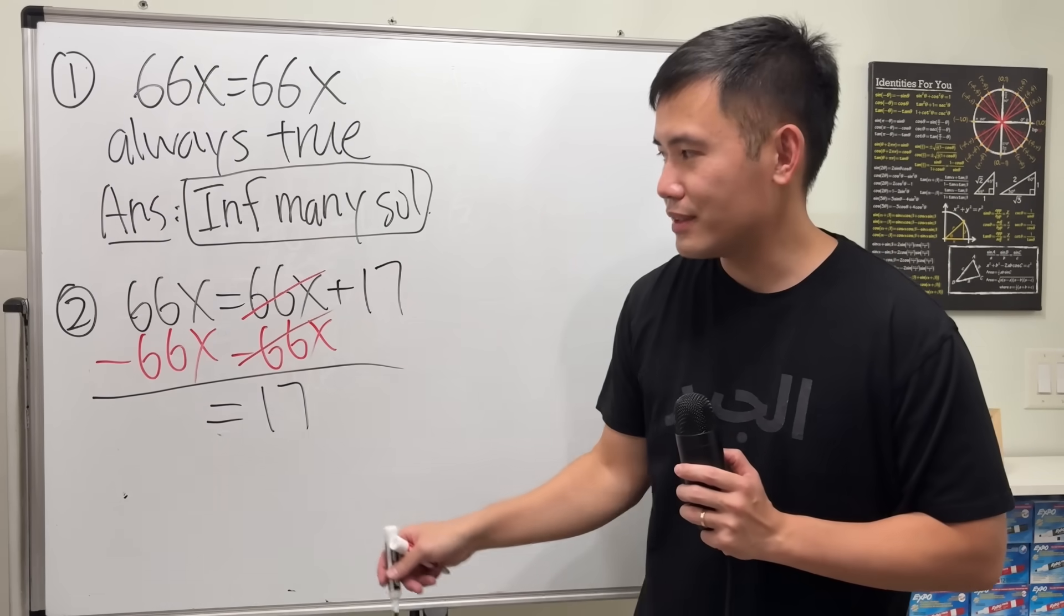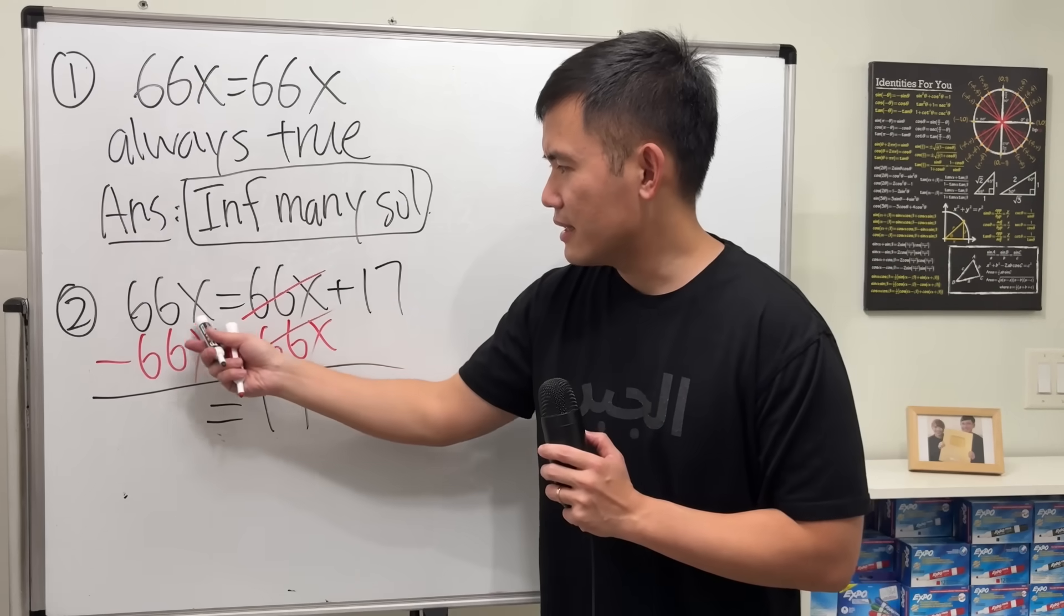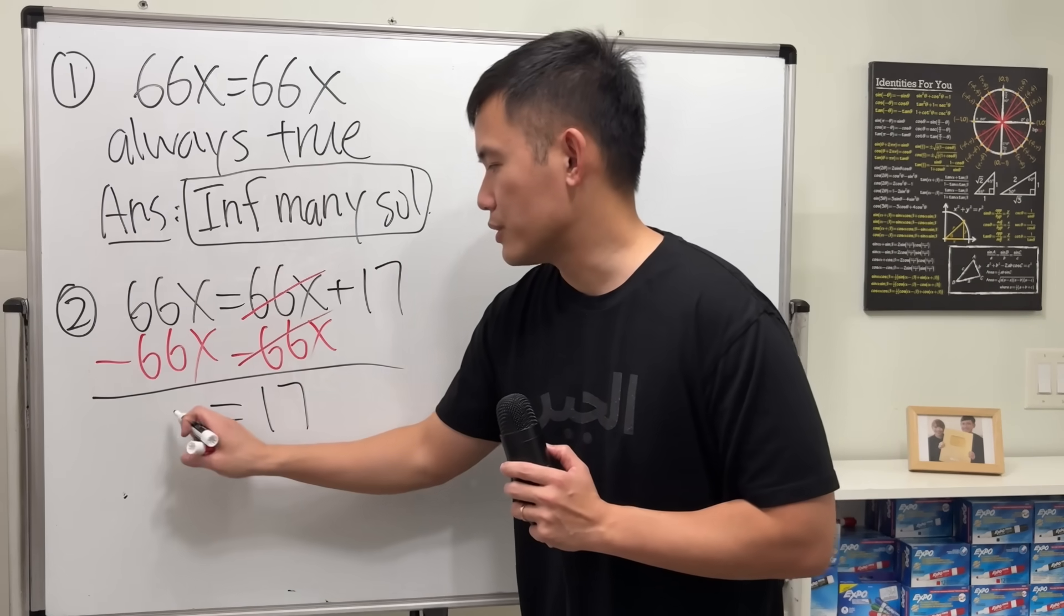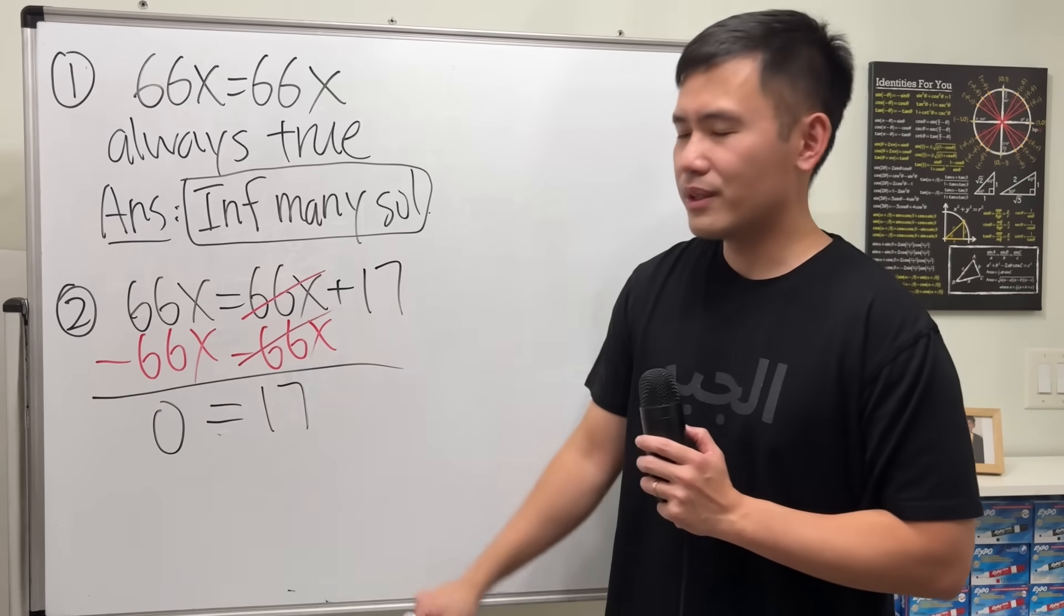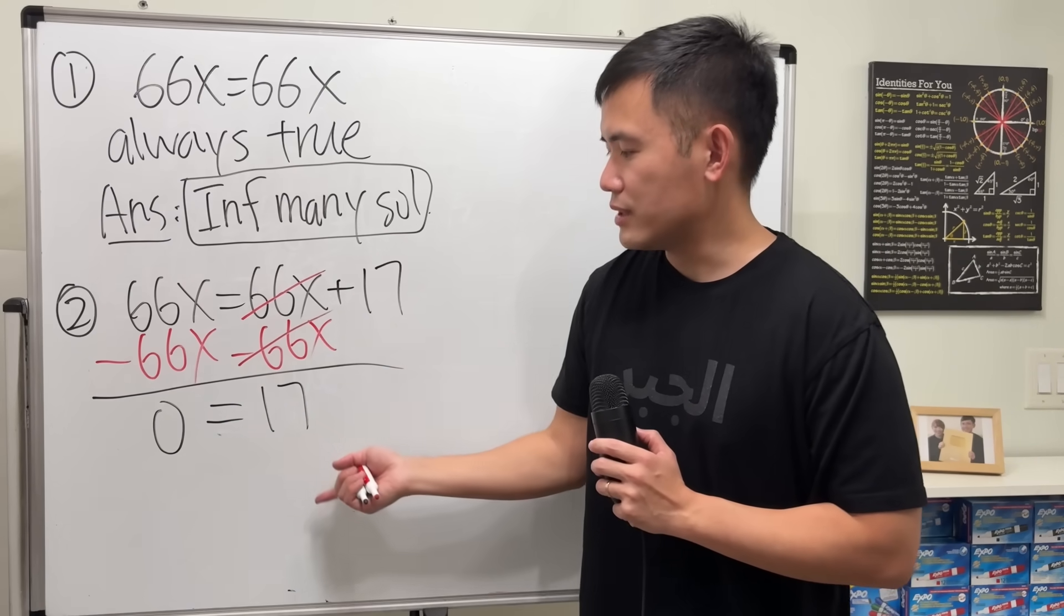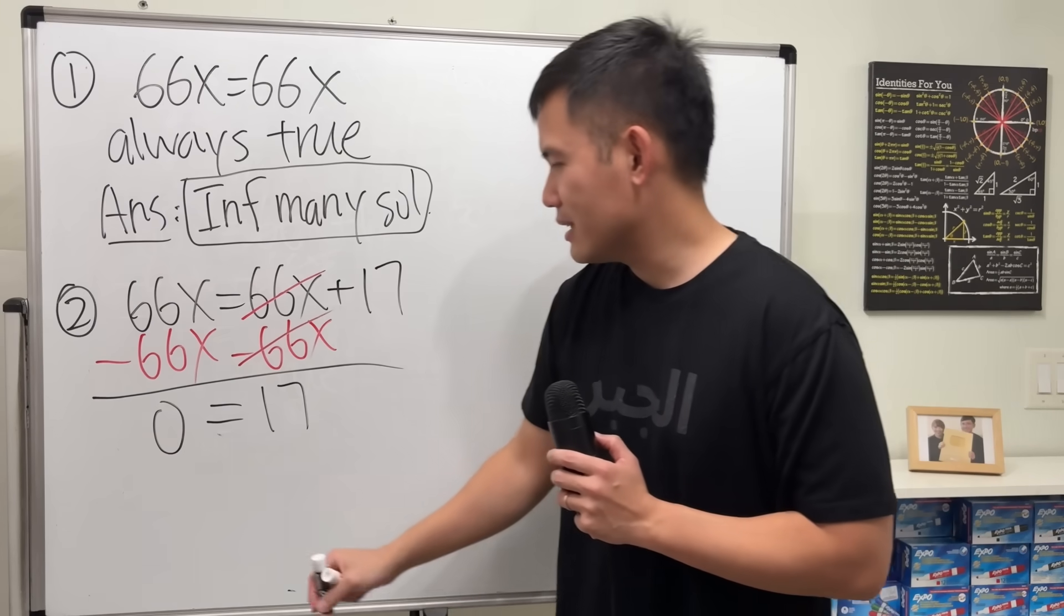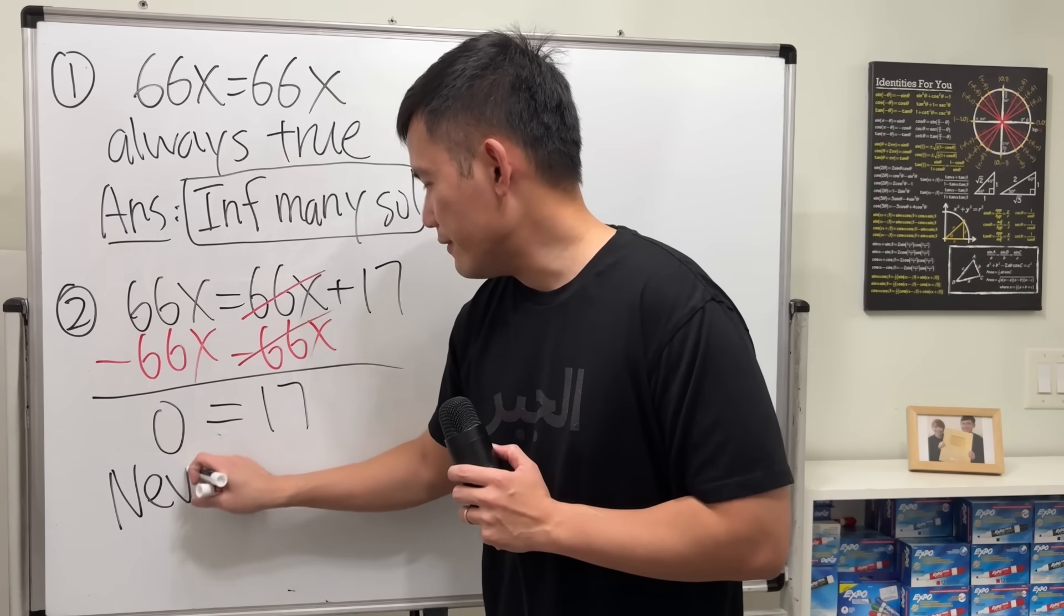And we will just have 0 plus 17, so that equals 17. Good. But what happened to the left side? 66x minus 66x is 0 times x, which is just 0. Now have a look. Right here we're saying 0 equals 17. Is this true? No, it's not possible.